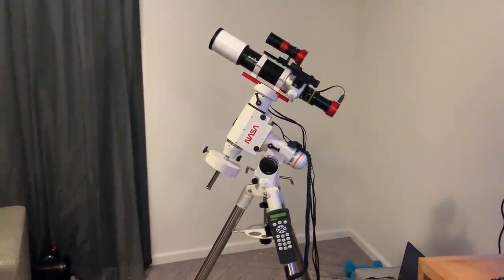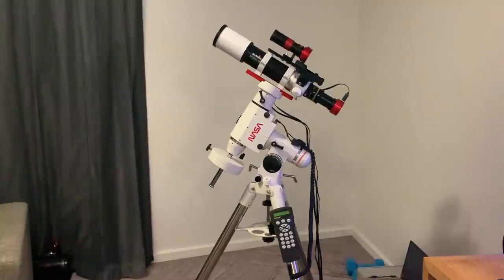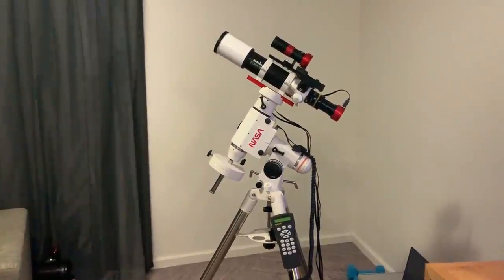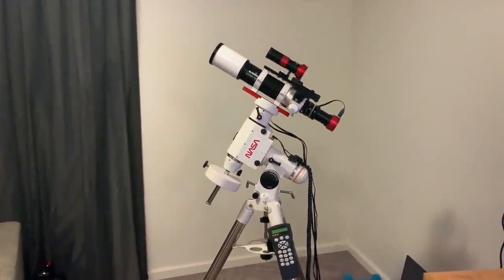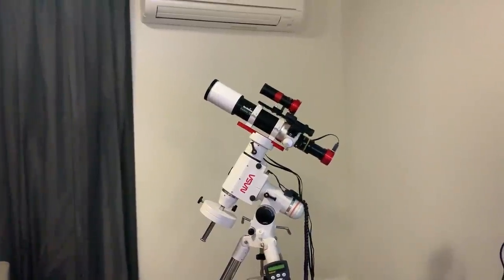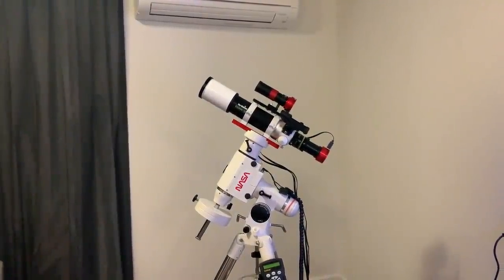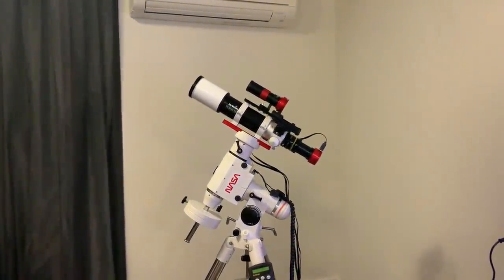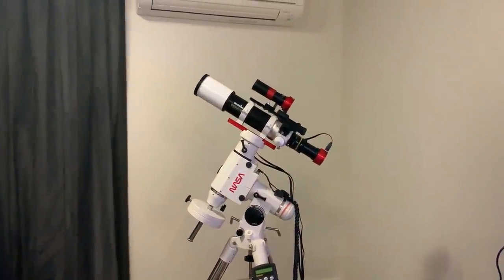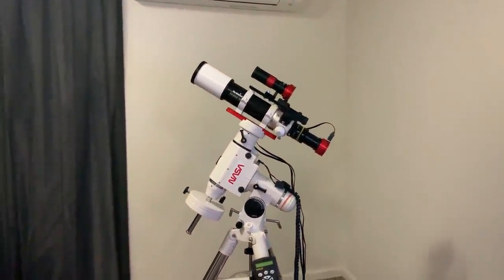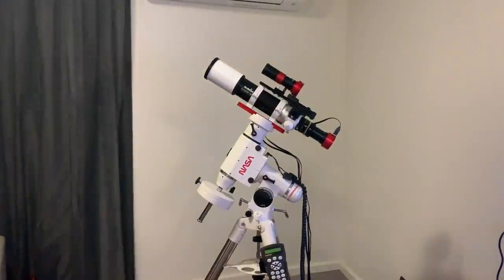This mount is a Skywatcher HEQ-5 Pro. It's a mid-size equatorial mount with a payload capacity of around 30 pounds. The telescope is a Skywatcher EVOSTAR 72ED refractor. And I have two ZWO cameras, one on the main telescope and one on the guide scope.